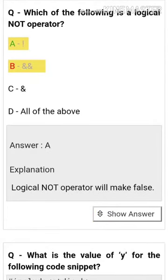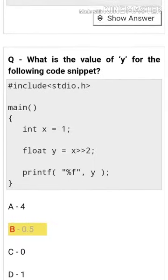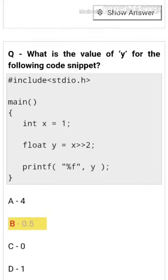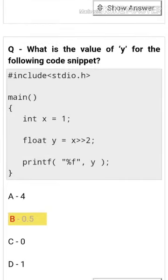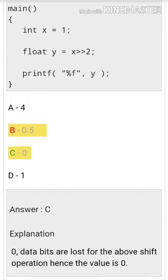What is the value of y for the following code snippet? The answer is zero. All data bits are lost for the shift operation, hence the value is zero.